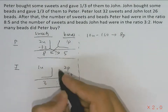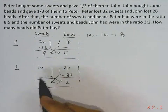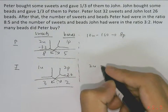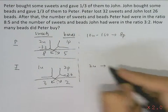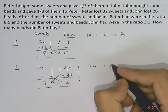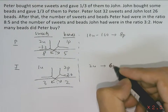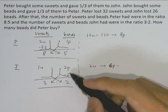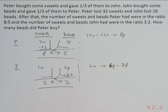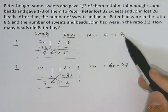Applying cross multiplication again gives another equation: 1 unit multiplied by 2 equals 2 units, equal to 2 parts multiplied by 3, which is 6 parts, minus 26 multiplied by 3, which is 78. So now we have: 10 units minus 160 equals 8 parts, and 2 units equals 6 parts minus 78.